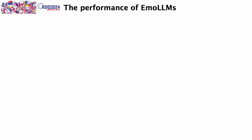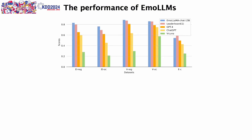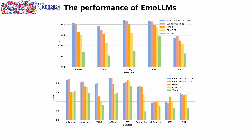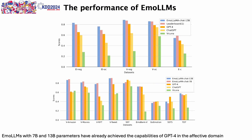This is the performance of EMOLLMs. From these two figures, we can see that EMOLLMs with 7 and 13 billion parameters have already achieved the capabilities of GPT-4 and have excellent generalization ability in the affective domain.